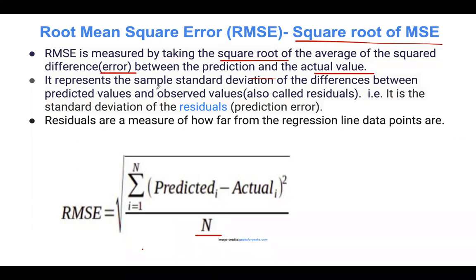Essentially, it represents the sample standard deviation of the differences between the predicted value and the observed value, called residuals. Residuals can be expressed as the difference between the actual value minus y-hat. This is your prediction, the prediction error. Sometimes we refer to this as residuals. Residuals are just a measure of how far from the regression line the data points are. RMSE is also a better performance metric because it squares the errors before taking the averages.